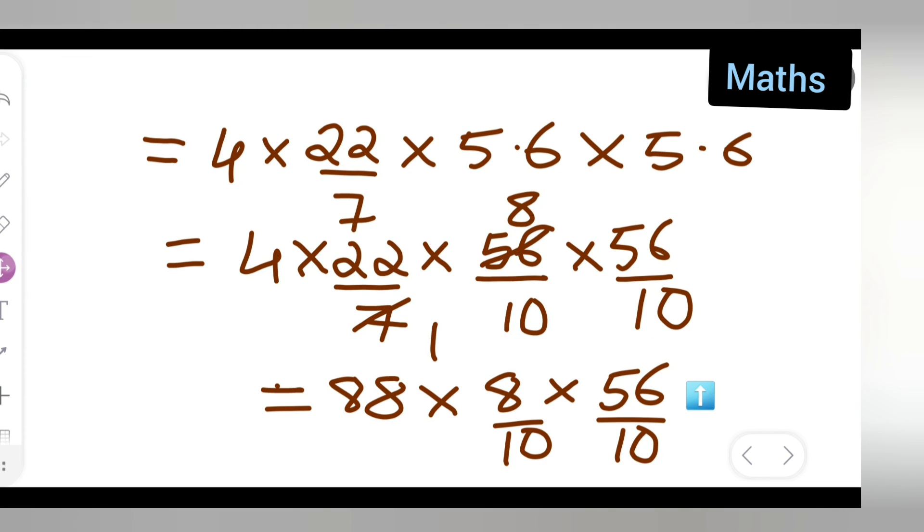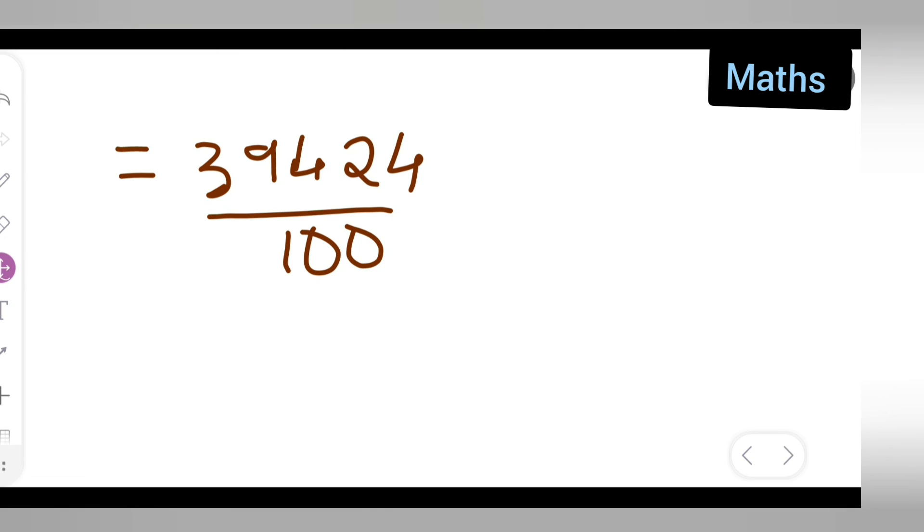So basically if you multiply this 88 multiplied by 8 multiplied by 56 you will get 39424 upon 100. So where the decimal point is going to come? 394.24 is your answer. Write down centimeter square.